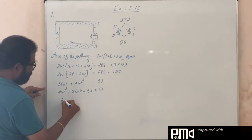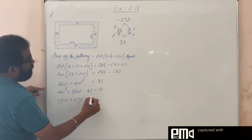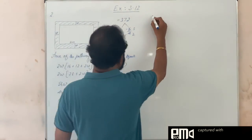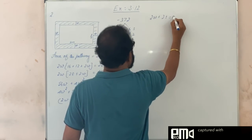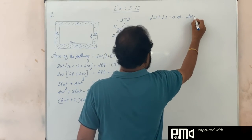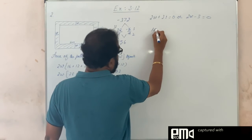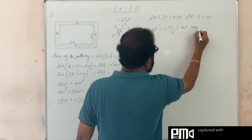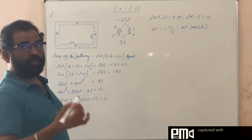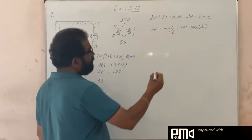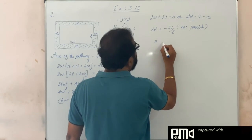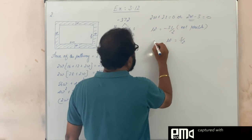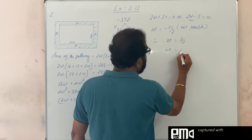So we get (2W plus 31)(2W minus 3) equals 0. From this, W equals minus 31 by 2, which is not possible since width cannot be negative. Therefore, 2W minus 3 equals 0, giving W equals 3 by 2, or W equals 1.5 meters.